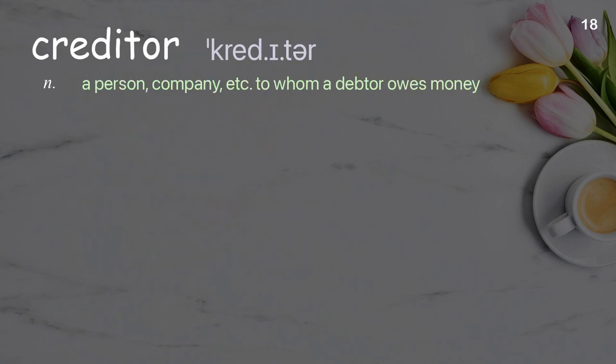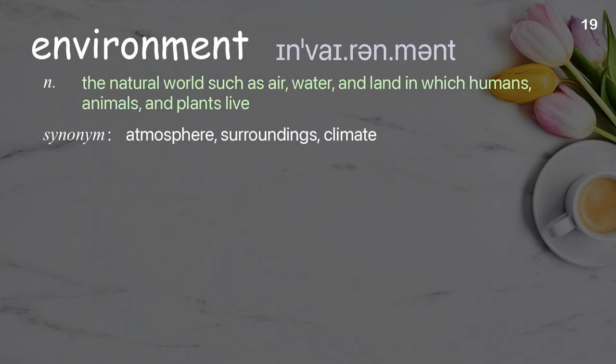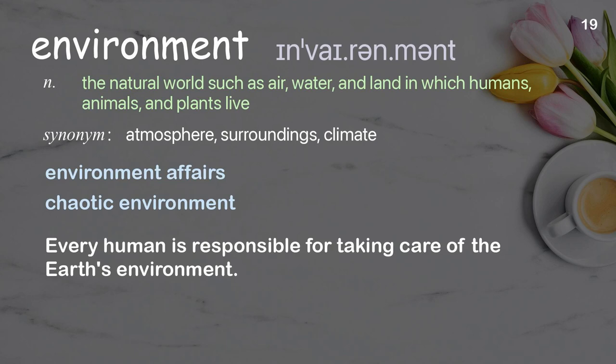Creditor: a person, company, etc., to whom a debtor owes money. Examples: the creditor's claims.